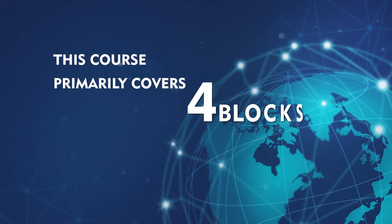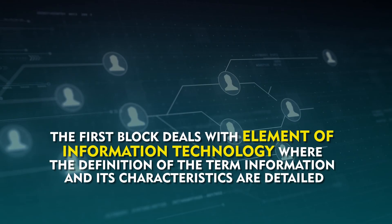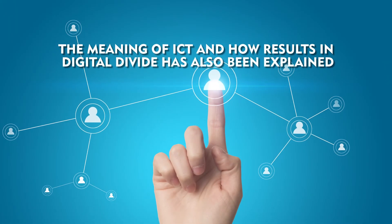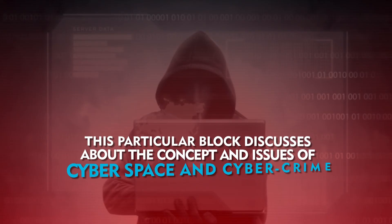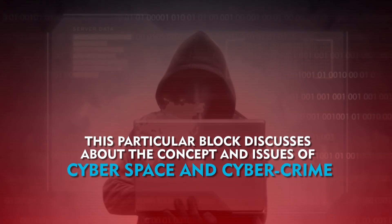This course primarily covers 4 blocks. The first block deals with elements of information technology, where the definition of the term information and its characteristics are detailed. The meaning of ICT and how it results in digital divide has also been explained. This particular block also discusses the concept and issues of cyberspace and cybercrime.